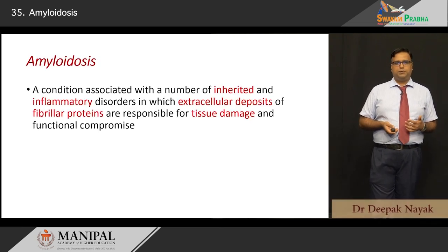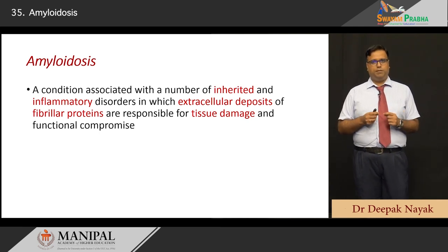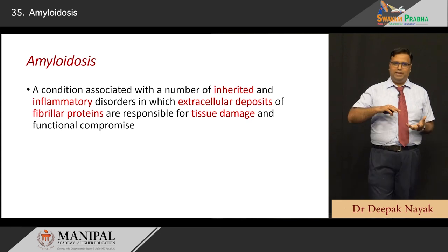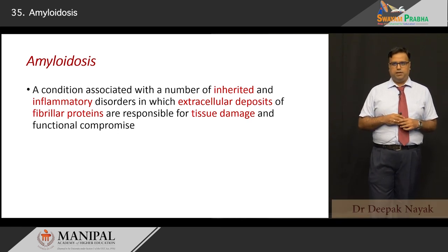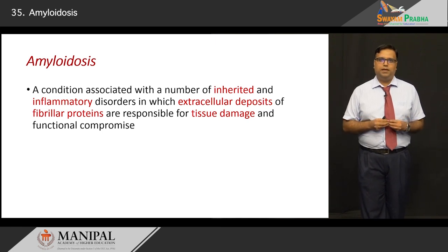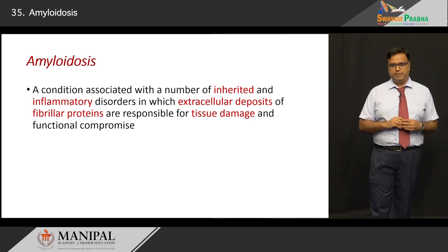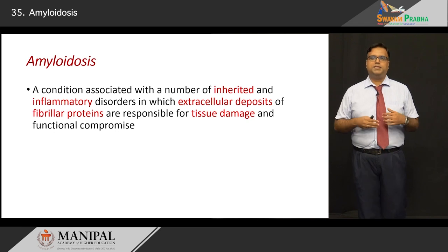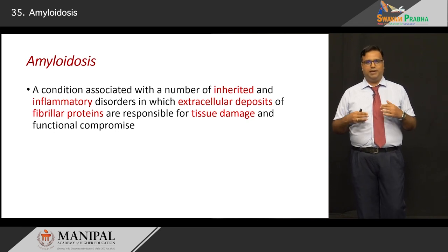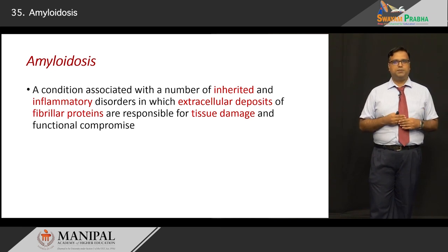What is amyloidosis? This is the textbook definition: it is not a simple condition, but a very complex one where there are inherited and inflammatory disorders. The end result is extracellular deposition of proteins which should not be there in the first place. Because of the increase in deposition of these proteins, they are responsible for tissue damage and functional compromise of the cells.